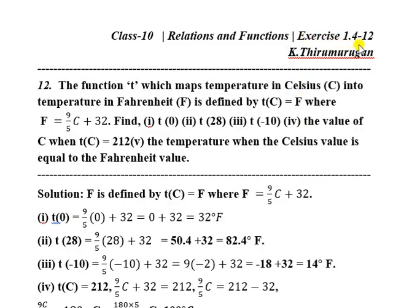Access 1.4, question number 12. The function T, which maps temperature in Celsius C into temperature in Fahrenheit F, is defined by T of C equal to F, where F equals 9 by 5 into C plus 32. Find the answers to 5 sub-questions.